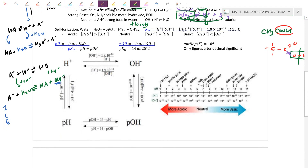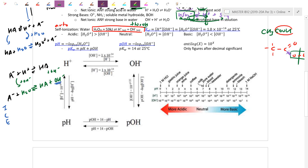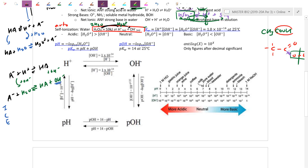Water is also amphiprotic. We have the special self-ionization (or auto-ionization) of water equation. For this reaction, there's an equilibrium constant Kw, always written with water on the left. Kw equals the product of H+ and OH- concentrations. Water always has the ability to ionize a little, always regenerating a little H+ and a little hydroxide.